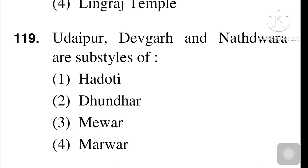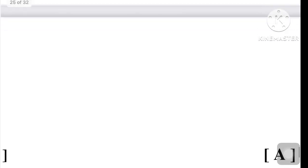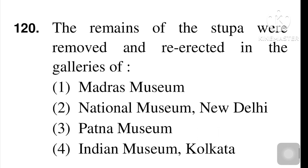Next question: Udaipur, Devgarh, and Nathdwara are sub-styles of — the right answer is Mewar, option number three. Next question: the remains of the stupa were removed and re-erected in the gallery of — Indian Museum, Kolkata, is the right answer.